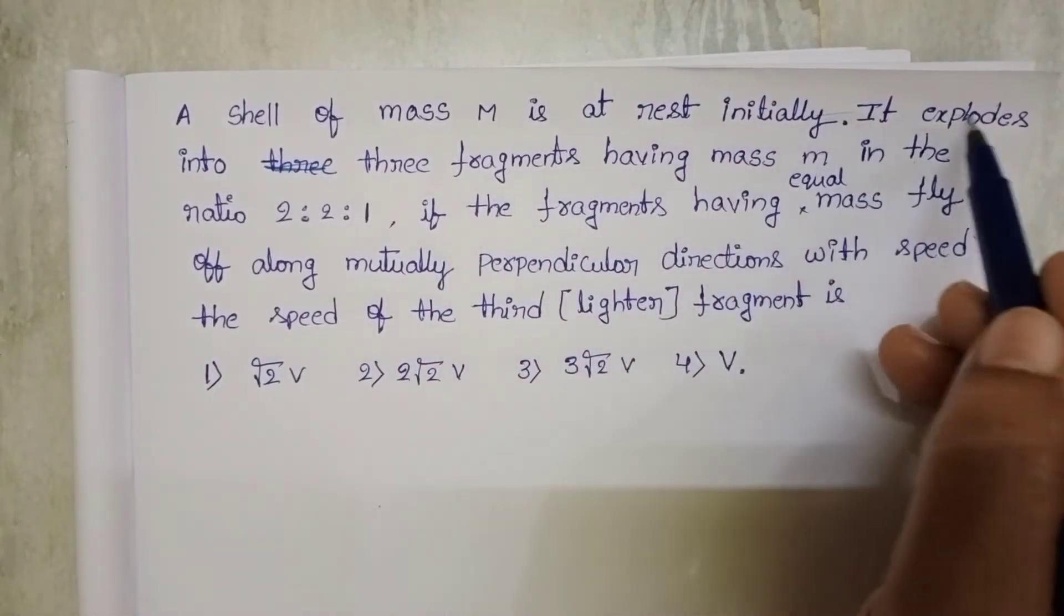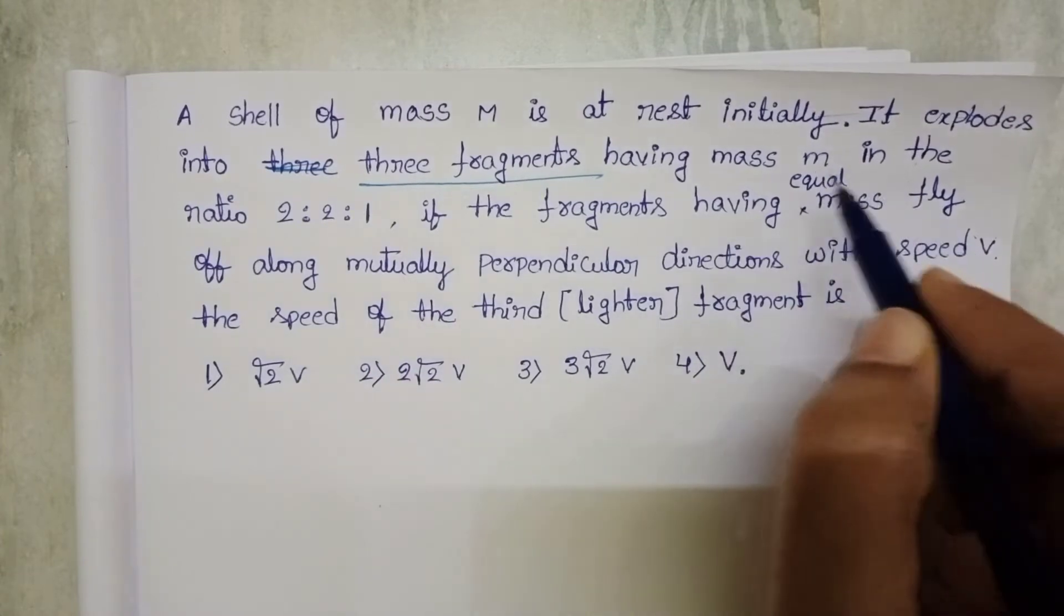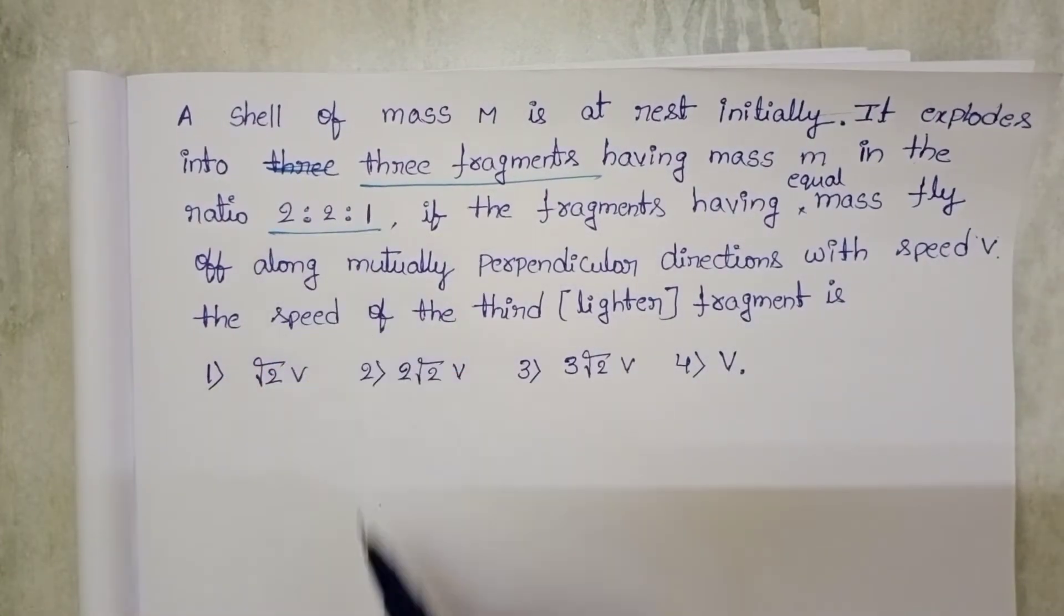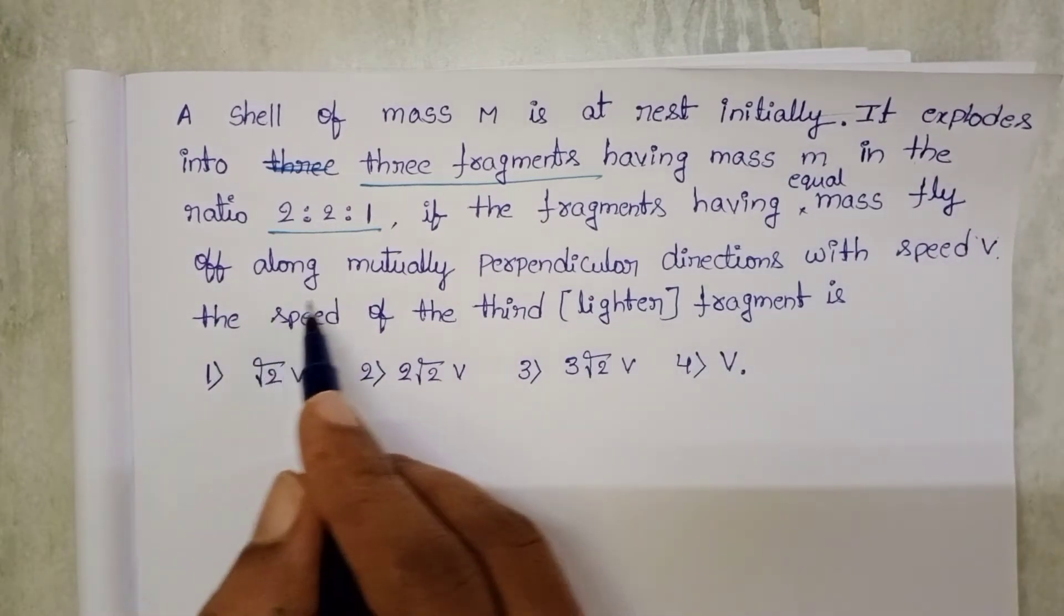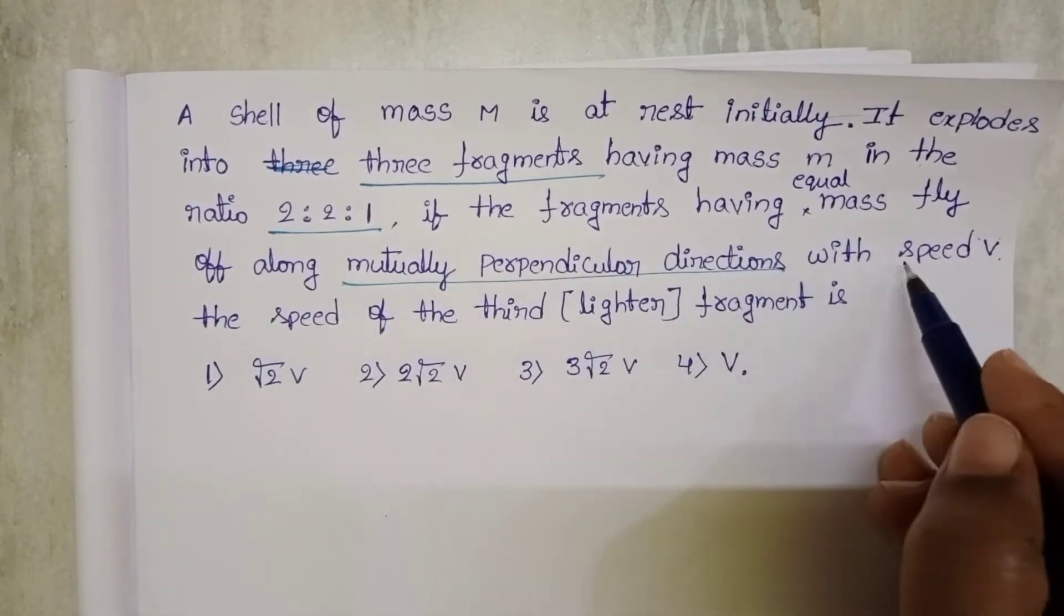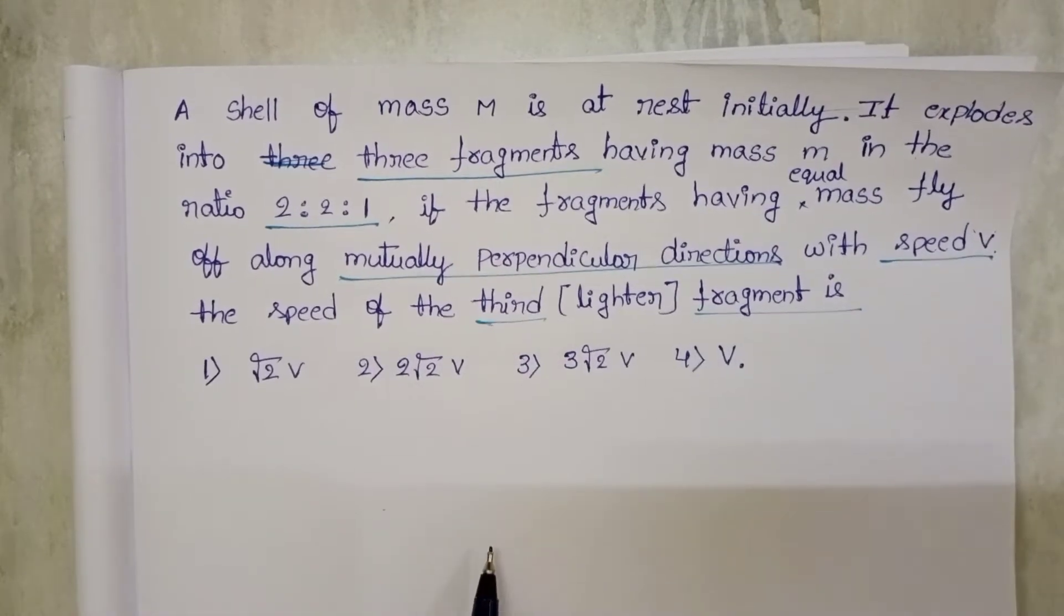A shell of mass M is at rest initially. It explodes into 3 fragments having mass in the ratio 2 is to 2 is to 1. If the fragments having the equal mass fly off along mutually perpendicular directions with speed V, the speed of the 3rd fragment is.